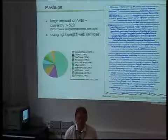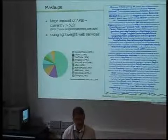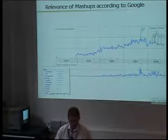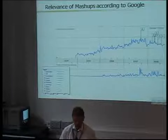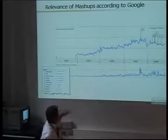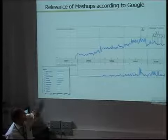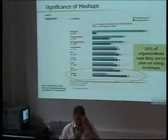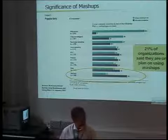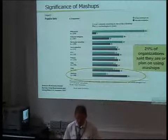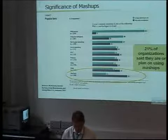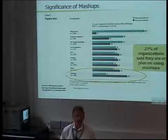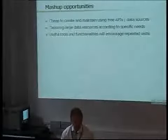You can recognize the importance of our field of work — it's different from the traditional field of work like surveying. Using Google Trends, you can see how the relevance of mashups increases every year, especially in the United States. A McKinsey survey found that more than 21% of important companies want to use such mashups — mashups in general, not only those based on geodata.